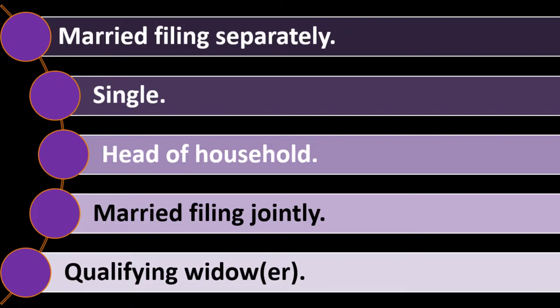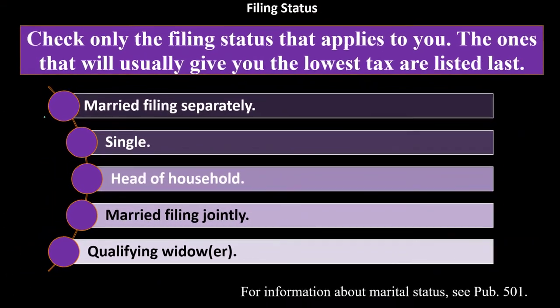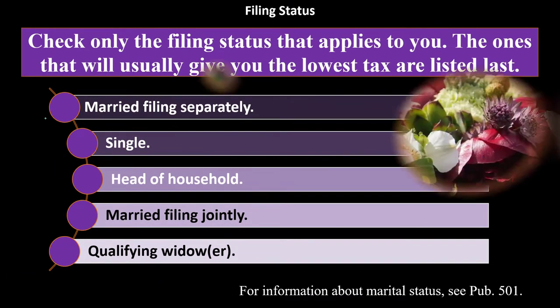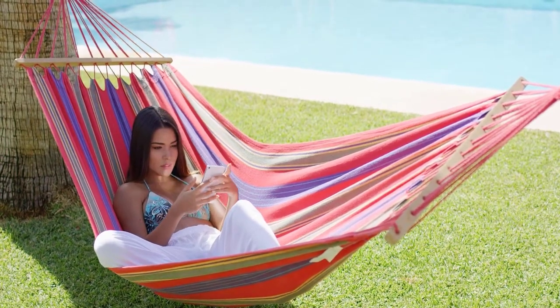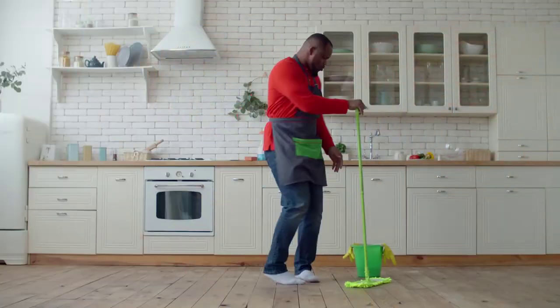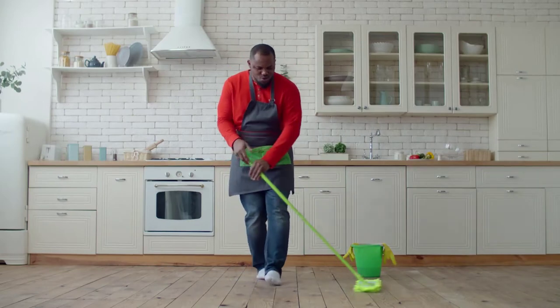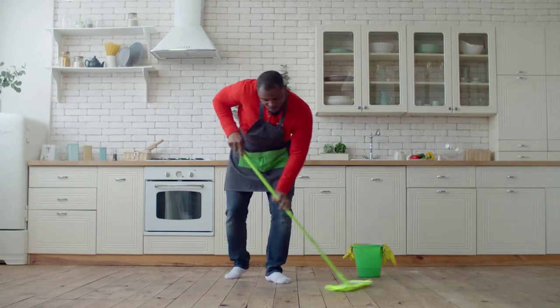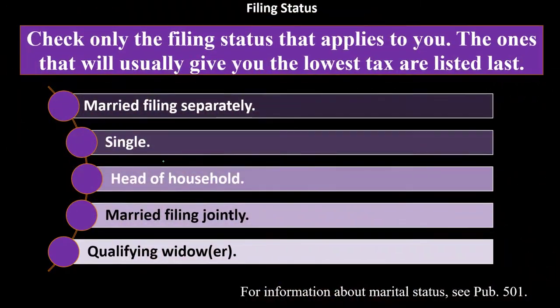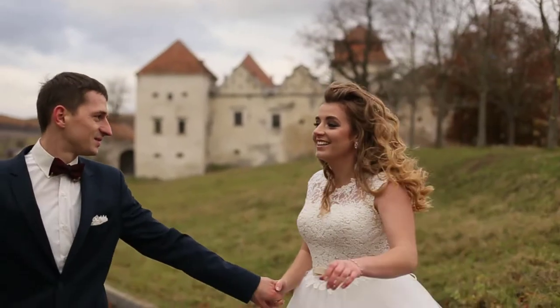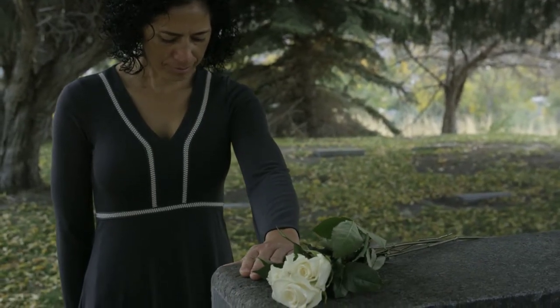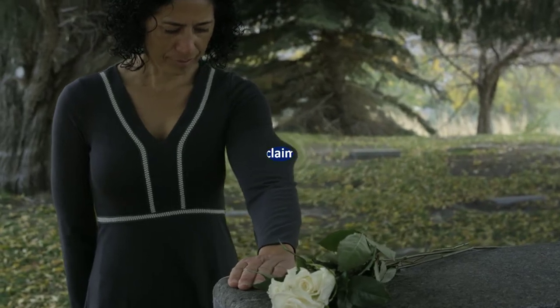I would group the filing statuses as married versus non-married. Under the non-married category, you have either single or head of household — head of household being better. You typically need a dependent to get head of household. Under the married category, you have married filing jointly or married filing separately, with married filing jointly being the default. And then you have qualified widow/widower, which is a specific condition based on widow/widower status.